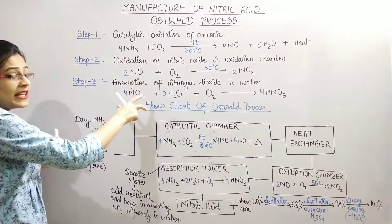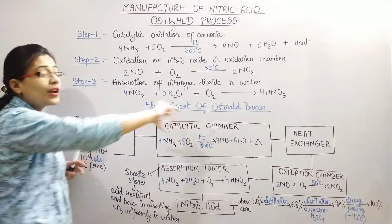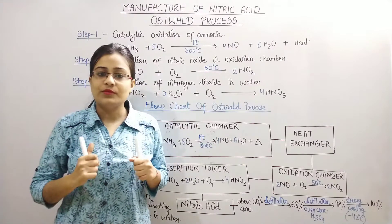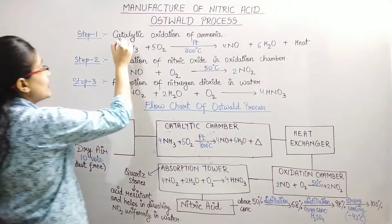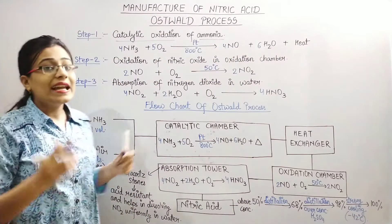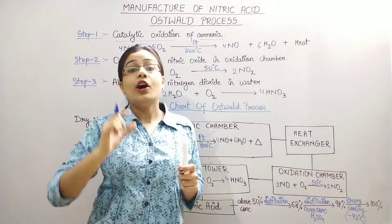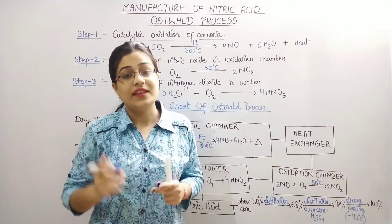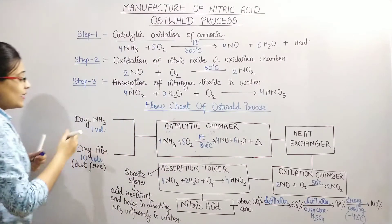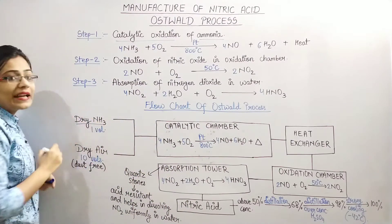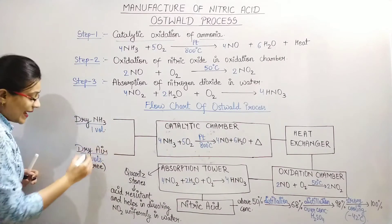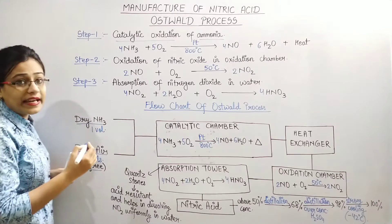So here I have the three steps of the Oswald Process. Let's start with the flow chart. On one side we have Dry Ammonia Gas, and on the other side we have Dry Air, which is dust-free air.